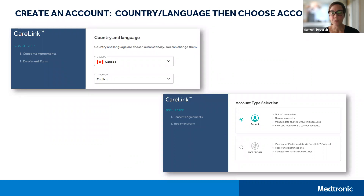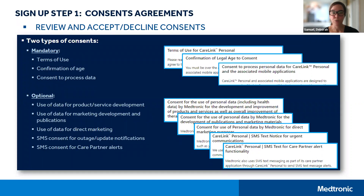There are steps to signing up for a CareLink account. First, you will want to select the account type. In your case, to upload your insulin pump, you'll want to select patient. Step one is to review and consent to the consent agreements. There are two types of consents, all of which are engaged to protect your privacy and your health information. The first three are mandatory in order to use the CareLink software. The last five are optional.